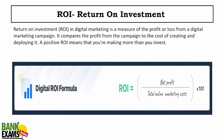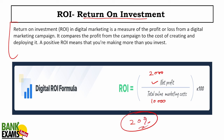Let's start with ROI — return on investment. In digital marketing, ROI is a measure of profit or loss from a digital marketing campaign. The formula: net profit divided by investment multiplied by 100. For example, if you made a profit of 2,000 rupees after investing 10,000 rupees in marketing, your ROI is 20%.